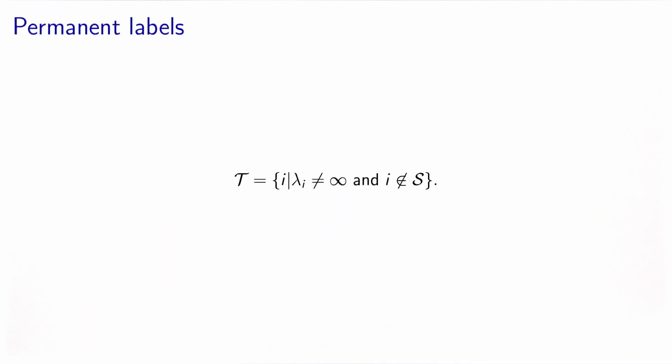The main property of this algorithm is that once a label has been set, it's not modified anymore. And this is what we will prove now. Let's call T the set of nodes such that the label has been set, so it is not infinity, and the node is not in the set S of nodes to be processed. And I want to show that this set is a set of permanent labels. It means that the labels will not be updated anymore by the algorithm.